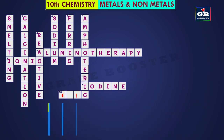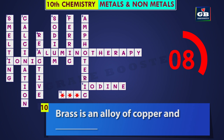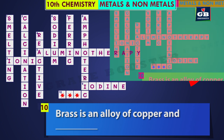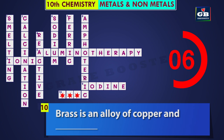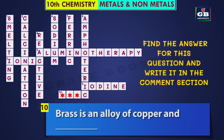Let us see the next one. Brass is an alloy of copper and dash. You find the answer for this question and write it in the comment box.